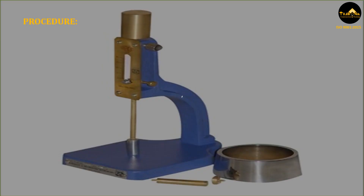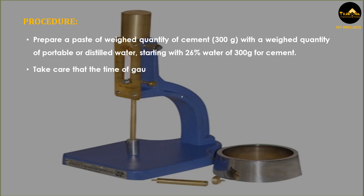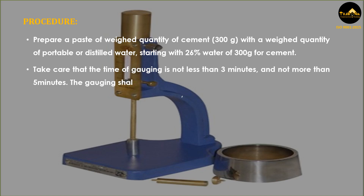Procedure: Prepare a paste of 300 grams of cement with a weighed quantity of potable or distilled water, starting with 26% water of 300 grams for cement. Take care that the time of gauging is not less than 3 minutes and not more than 5 minutes. The gauging shall be completed before setting occurs.